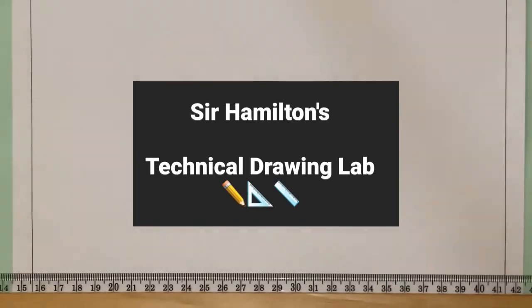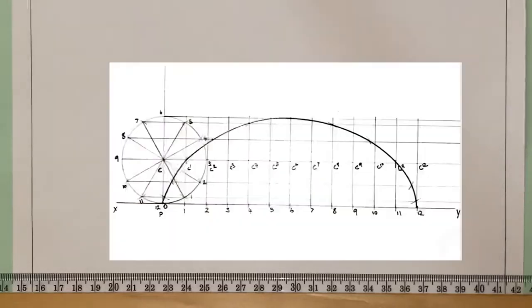Welcome back to another video here in the technical lab with Mr. Hamilton. For today's drawing, we're going to be doing the cycloid. The simplest definition: a cycloid shows the path which a point on the circumference of a circle travels when that circle is put in motion.